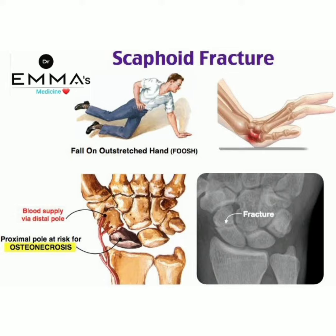The important points to remember about scaphoid fracture: it occurs by a fall on outstretched hand (FOOSH), and importantly, osteonecrosis occurs in the proximal pole. That is the key summary of scaphoid fracture.